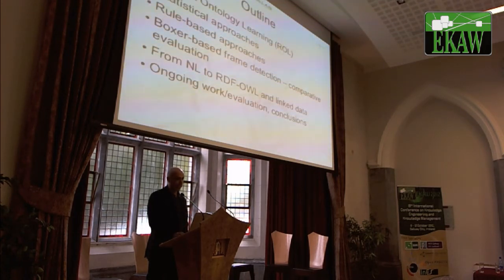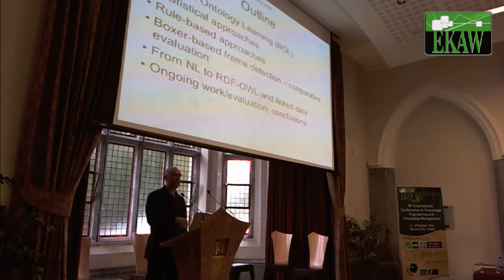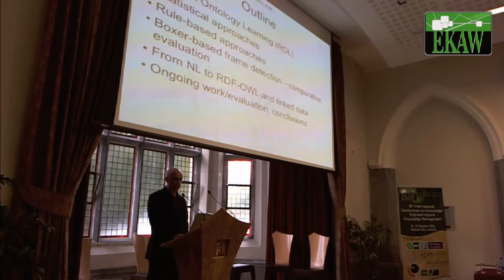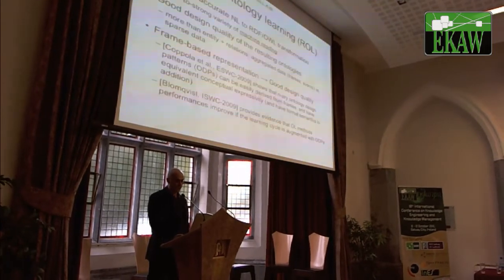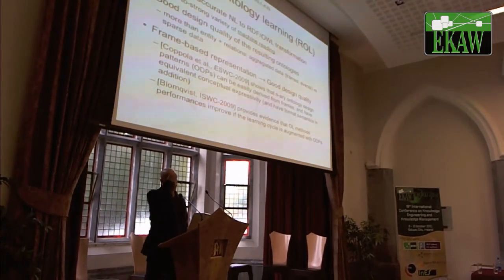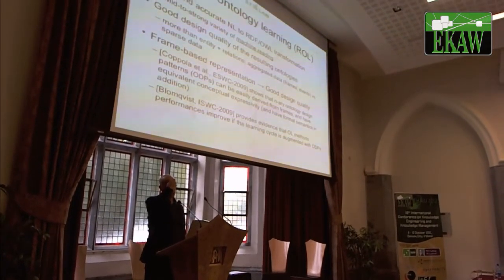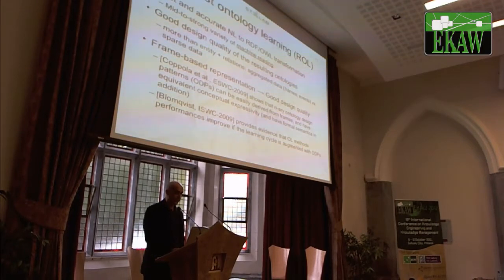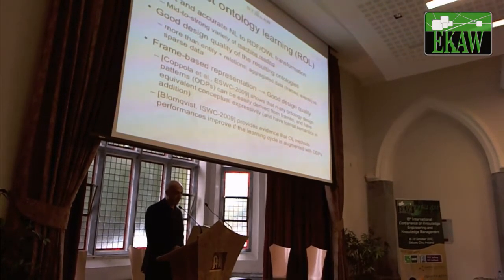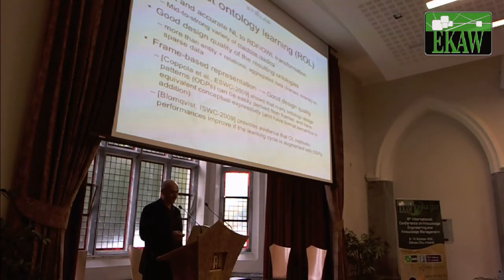The outline: I will talk about the idea of making ontology learning more robust, distinguishing statistical and rule-based approaches, and what we have done by reusing a deep semantic parser called Boxer, and then translating and transforming its output into semantic web languages. The idea of robust ontology learning is to have fast and accurate natural language to RDF — a mid-to-strong variety of machine reading — with good design quality of the resulting ontologies, having more than just entities plus relations, and aggregated data, not just sparse axioms.